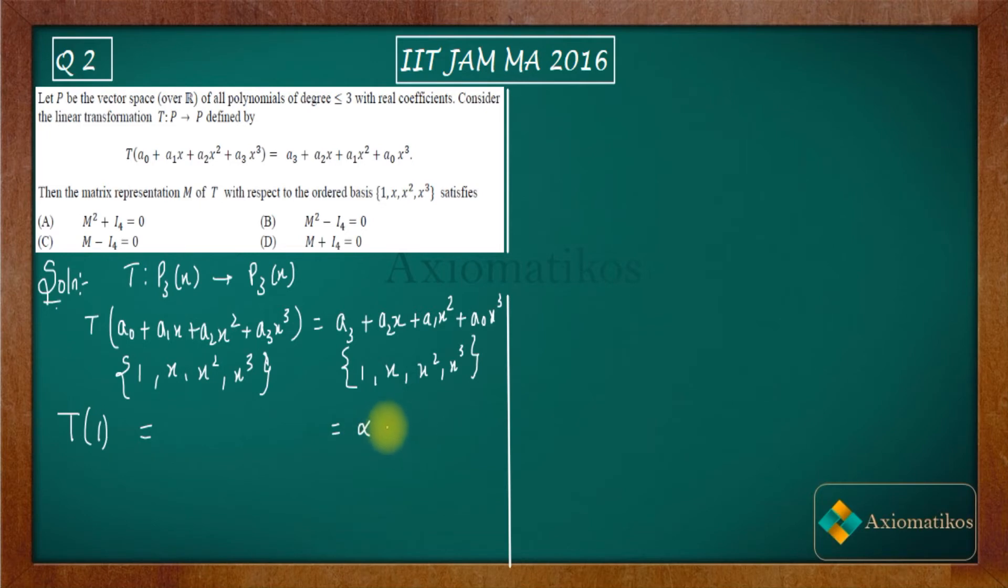So α·1, it's α·1 plus β·x plus γ·x² plus δ·x³. What I have done? I have written the linear combination of these. Now what I will do? I will find out the values of α, β, γ, and δ.